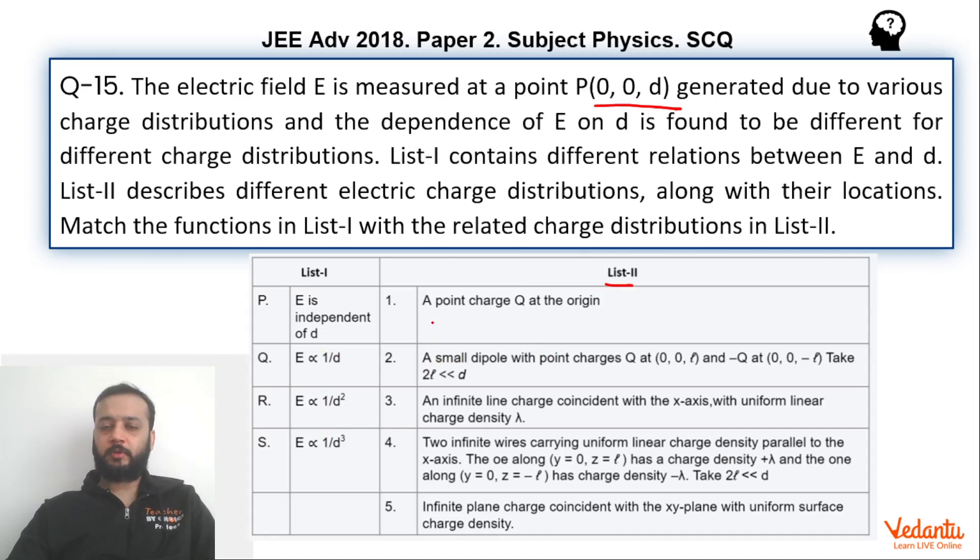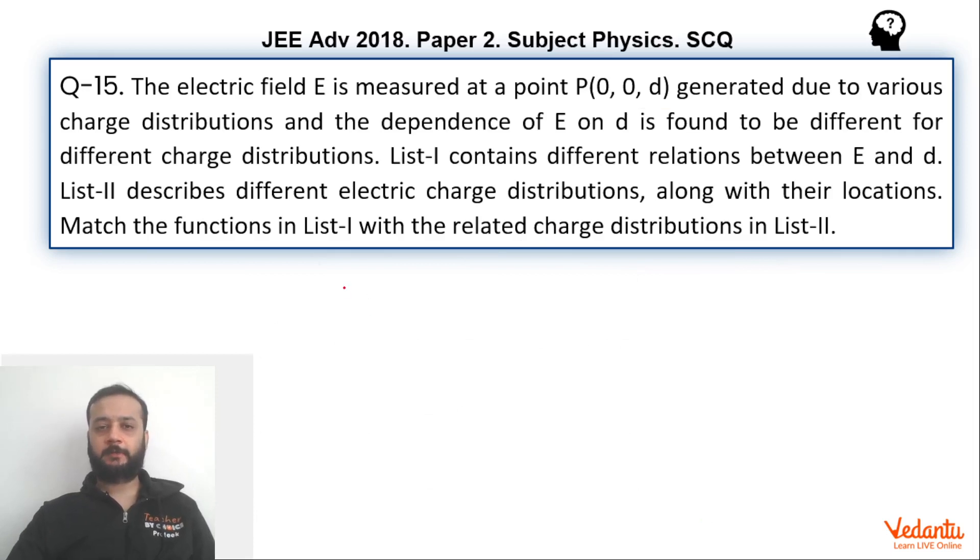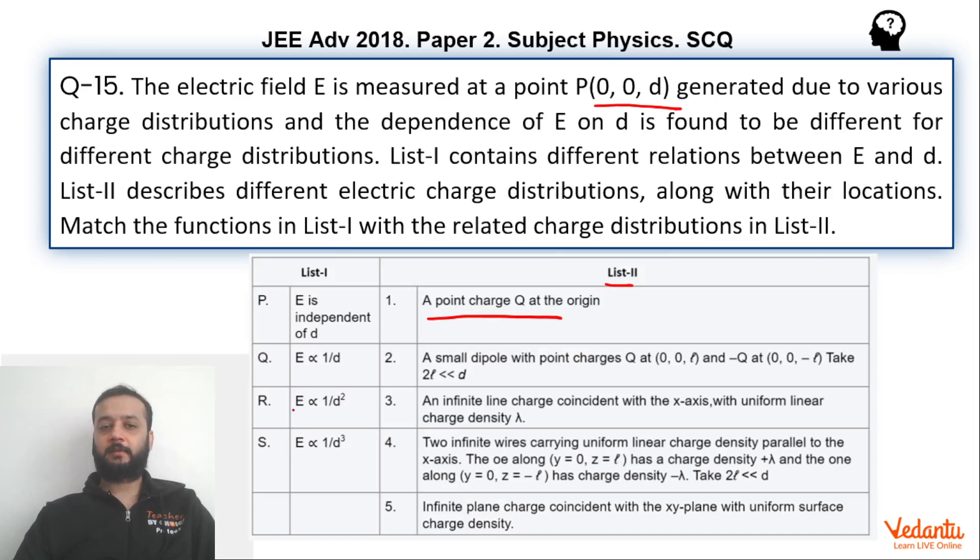If you talk about the first configuration, point charge kept at origin. If you see the point charge kept at origin, let's take this to be z-axis and this to be x-axis. If the point charge is kept on this location at the origin, so we know that this will be 0, 0, d. So the electric field is very simple, it will be KQ by d square. So E will be proportional to 1 by d square. So we can say that P matches with 1.